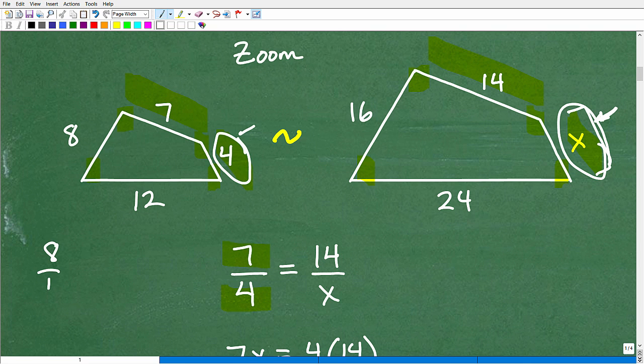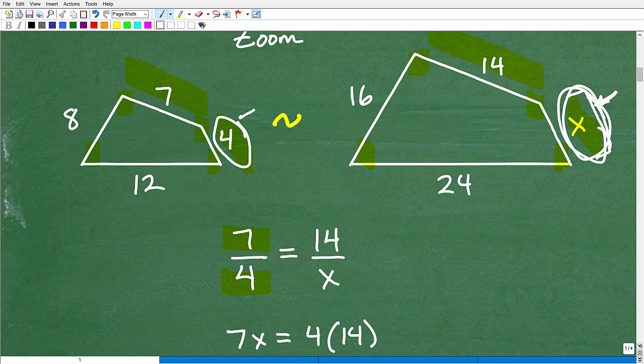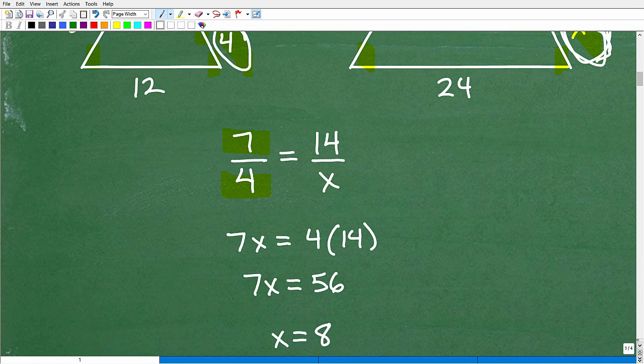You don't want to set up a proportion like this: eight over 12 equals 16 over 24. That's not going to help us out because it doesn't involve the variable X or missing value. So hopefully you can see, okay, I understand that.